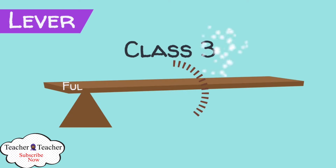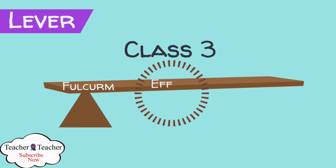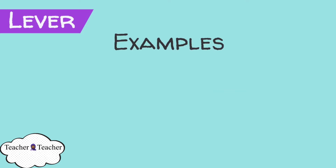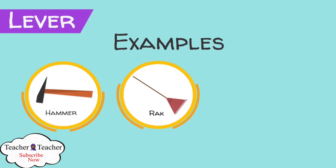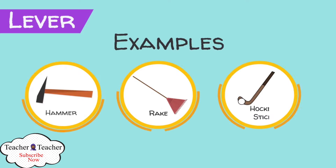In class three lever, the effort happens between the load and the fulcrum. Examples of class three levers are hammer, brake, and hockey stick.